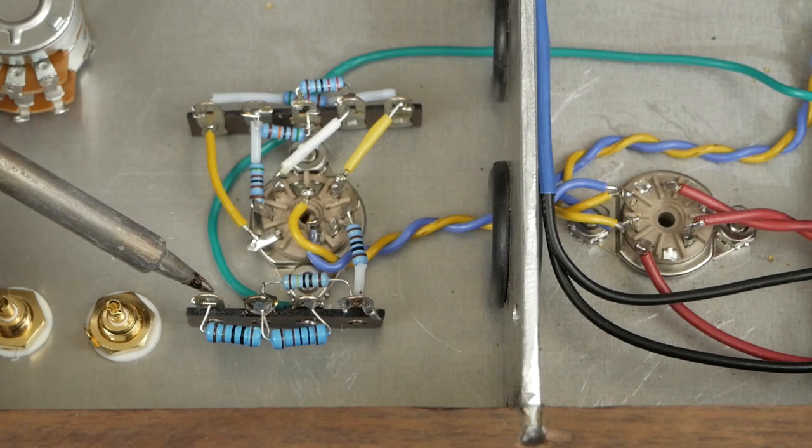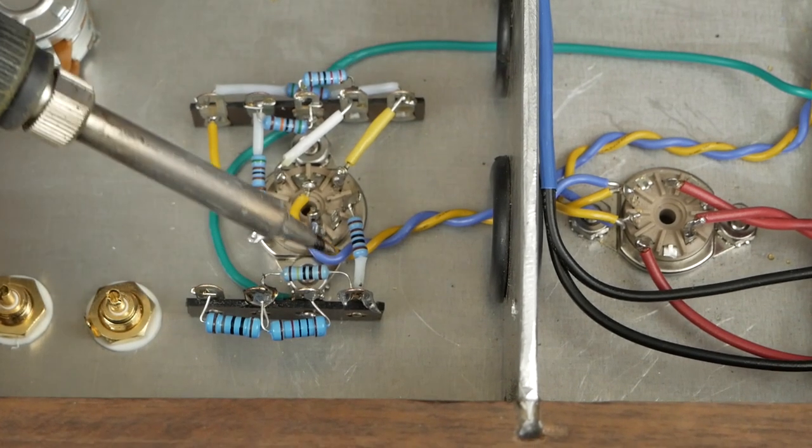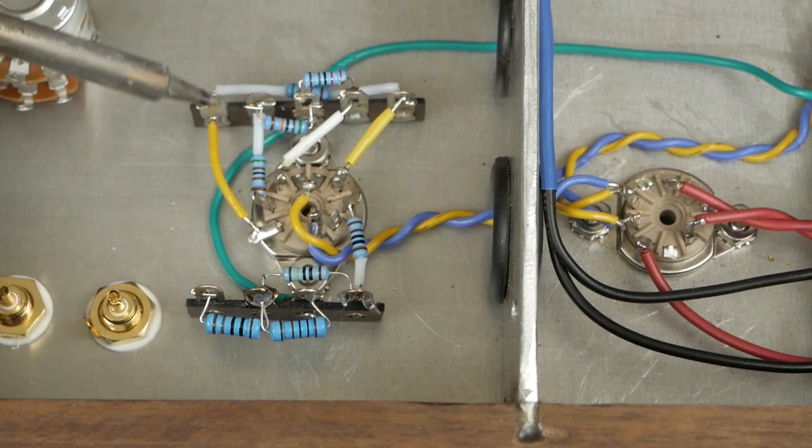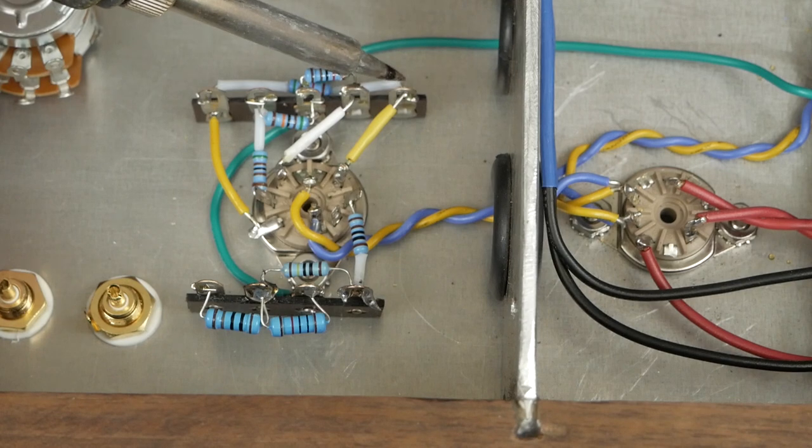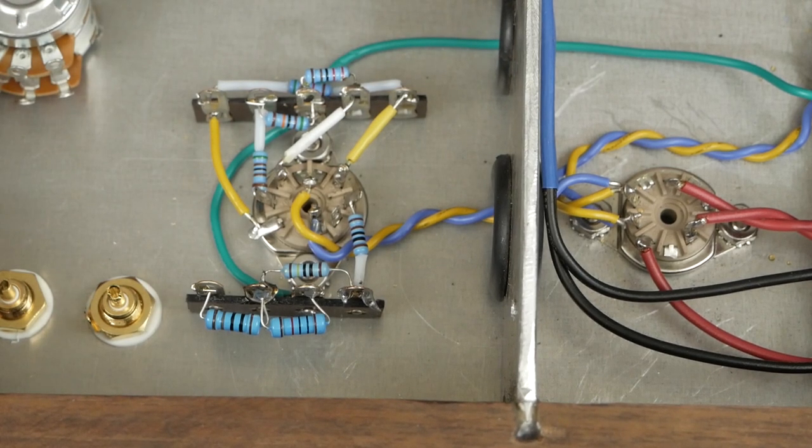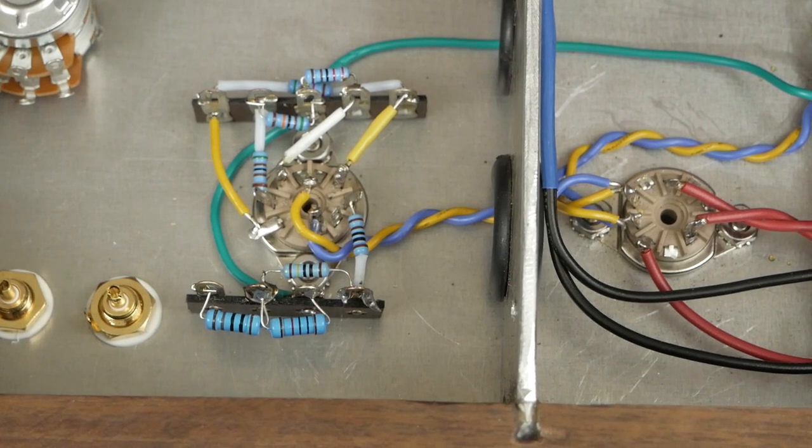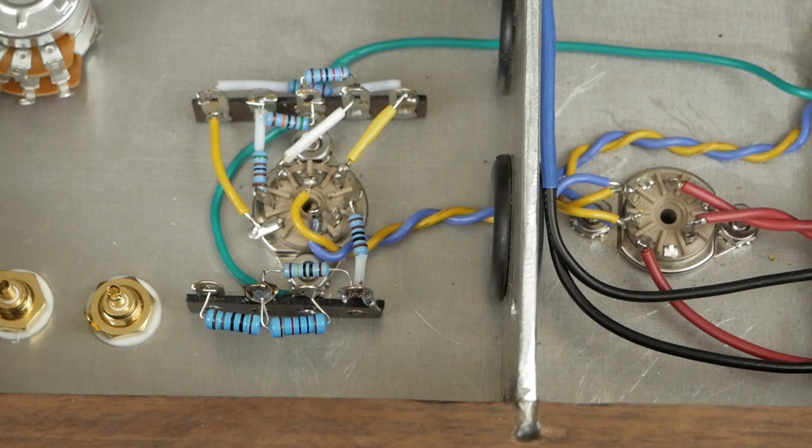So this is going to be our output that goes to the volume control. And the coupling cap is going to go across from here to there. So let me get the wire together to put up to here and find my capacitors and stuff, and we'll finish wiring up this one tube. Then I can do the other one off camera and get ready to power this thing up and start checking voltages.